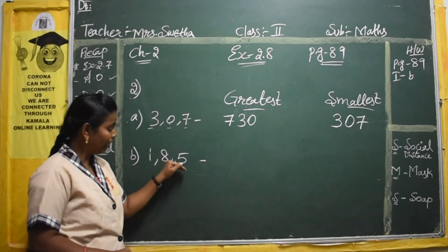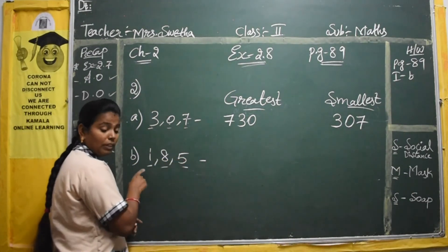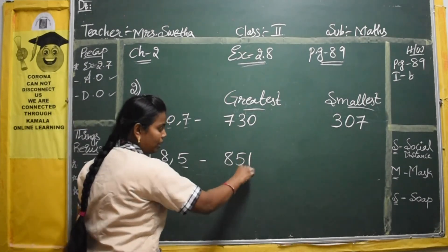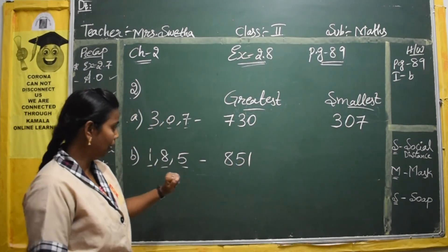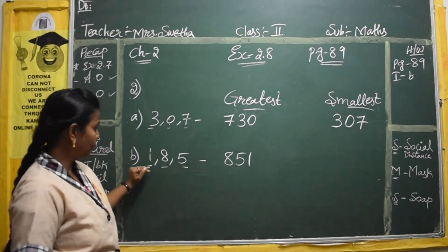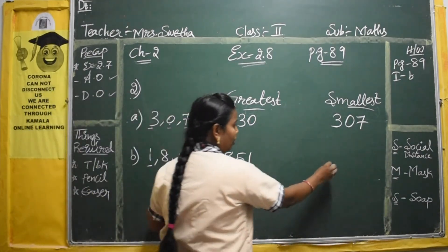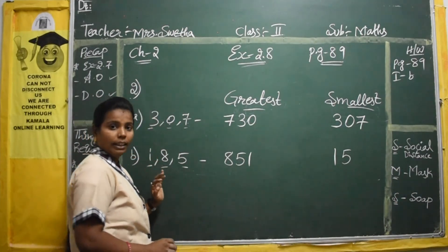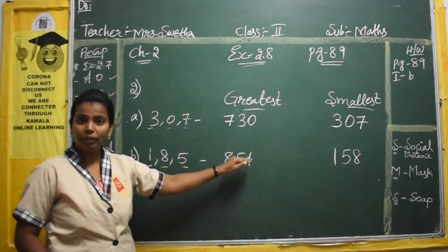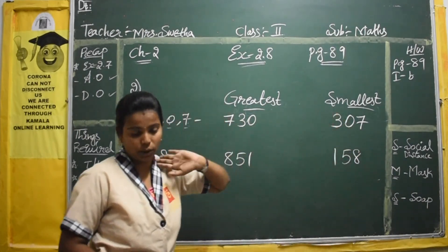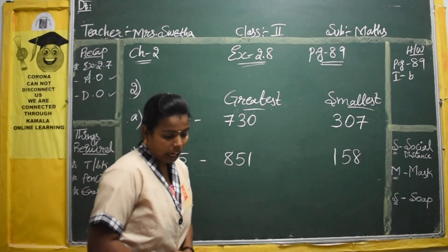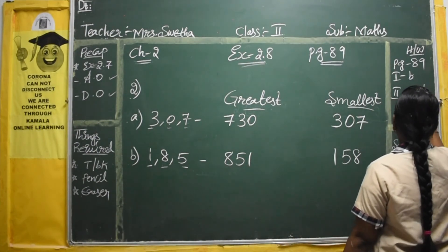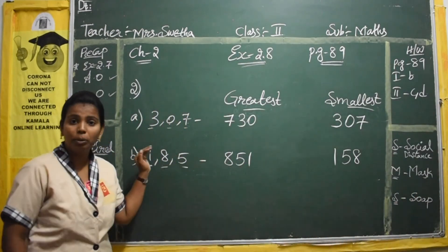Next example: digits 1, 8, 5. To form the greatest number: the biggest digit is 8, second biggest is 5, and the leftover is 1. So the greatest number is 851. For the smallest number: the smallest digit is 1, next smallest is 5, and the leftover is 8. So the smallest number is 158. The other two questions in this bit are your homework.